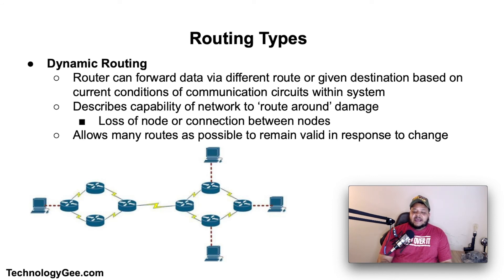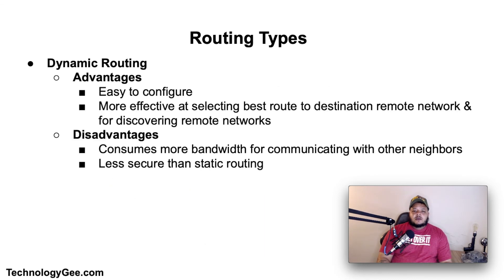Next we have dynamic routing. Dynamic routing is a process where a router can forward data via a different route to a given destination based on the current conditions of the communication circuits within a system. The term is most commonly associated with data networking to describe the capability of a network to route around damage such as loss of a node or connection between nodes. Some advantages of dynamic routing are that it's easy to configure and more effective at selecting the best route to a destination remote network and also at discovering remote networks.